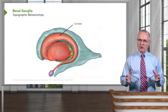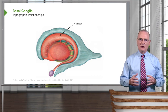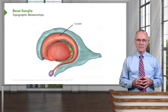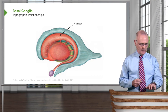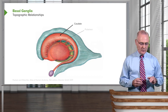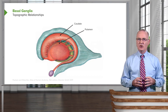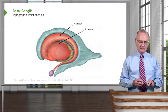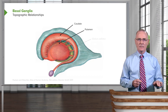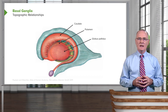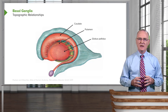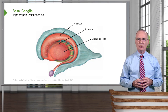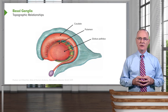The basal ganglia shown in this representation include the caudate nucleus. We can see its relationship to the putamen, and then we can see the relationship of these two structures to the globus pallidus.